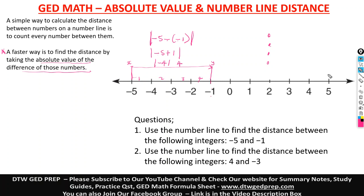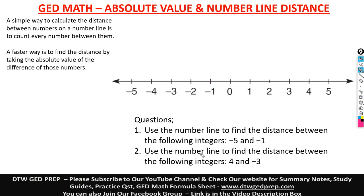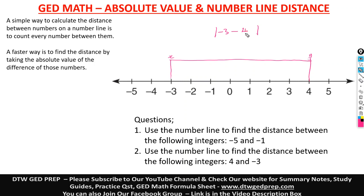The second question says: use the number line to find the distance between positive 4 and negative 3. We take the absolute value of the difference: negative 3 minus positive 4, which is negative 3 minus 4, giving us negative 7. The absolute value of negative 7 is a positive 7. So that's the distance between those two points.